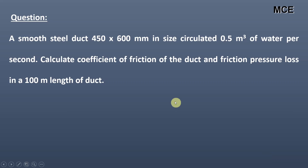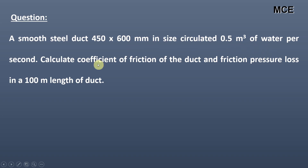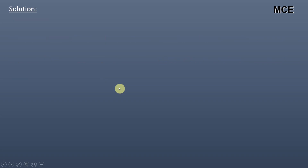Hello and welcome to Master Soil Engineering. This question is from fluid mechanics in which we have to calculate the friction pressure loss in a non-circular pipe. The question states that a smooth steel duct 450 cross 600 mm in size circulates 0.5 meter cube of water per second. Calculate the coefficient of friction of the duct and friction pressure loss in a 100 meter length of duct.